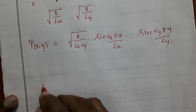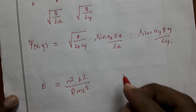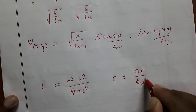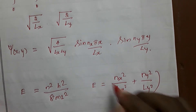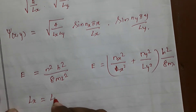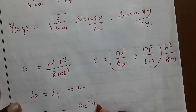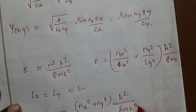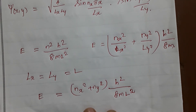The energy for the two-dimensional box is: E = (h²/8m)(nₓ²/lₓ² + n_y²/l_y²). If lₓ and l_y are equal, both are taken as l, and the energy simplifies to: E = (h²/8ml²)(nₓ² + n_y²). This is the energy expression for the two-dimensional particle-in-a-box. Thank you.